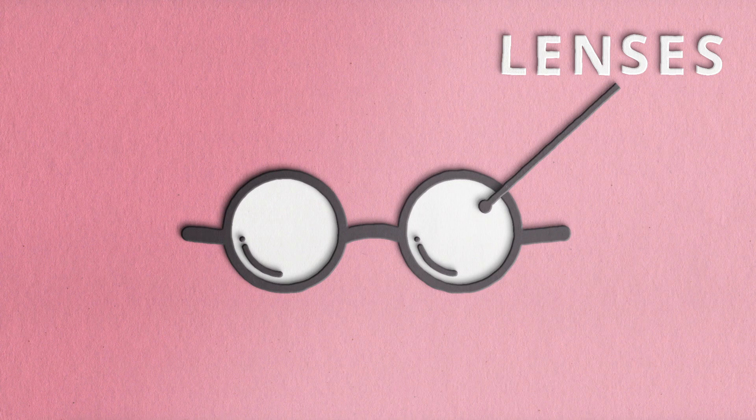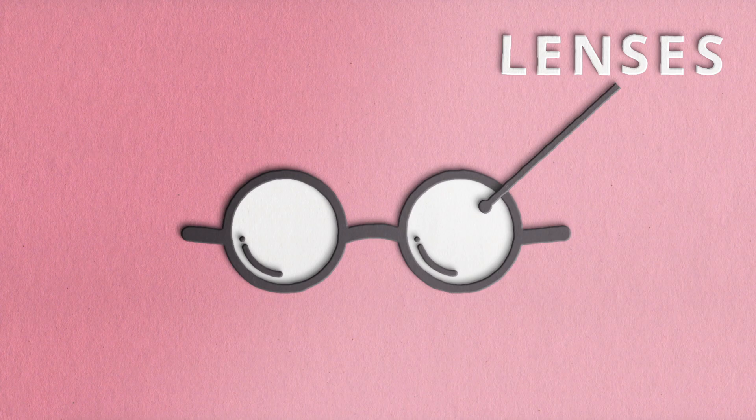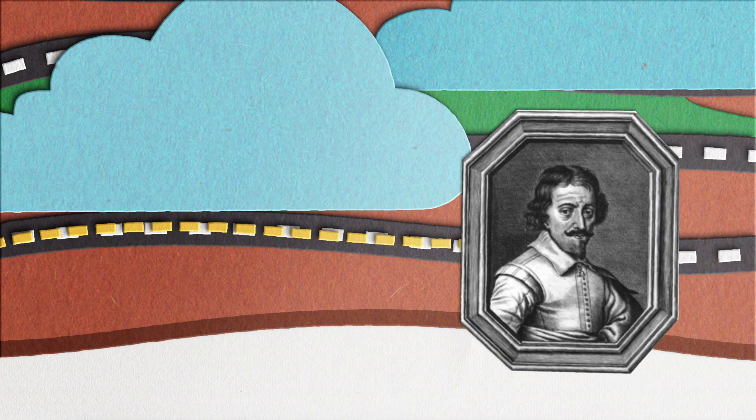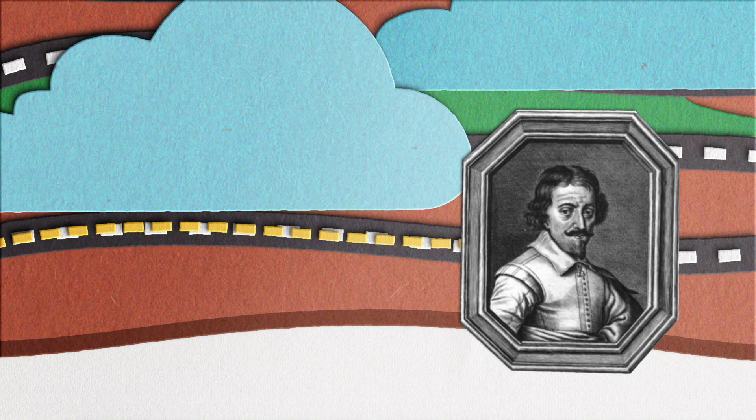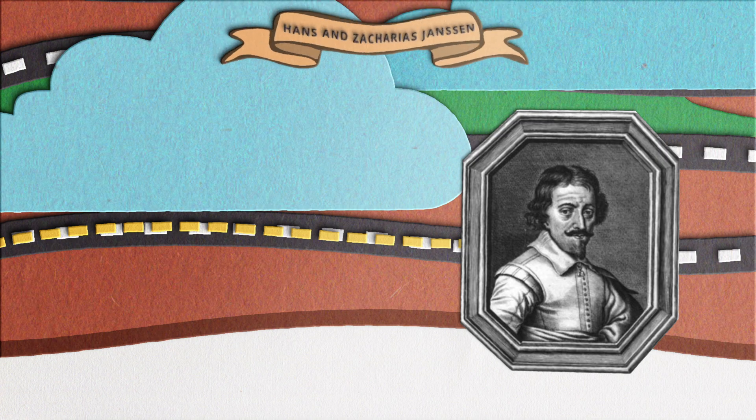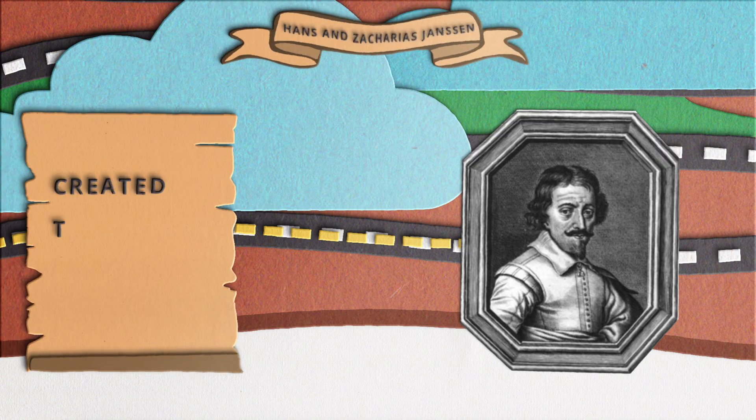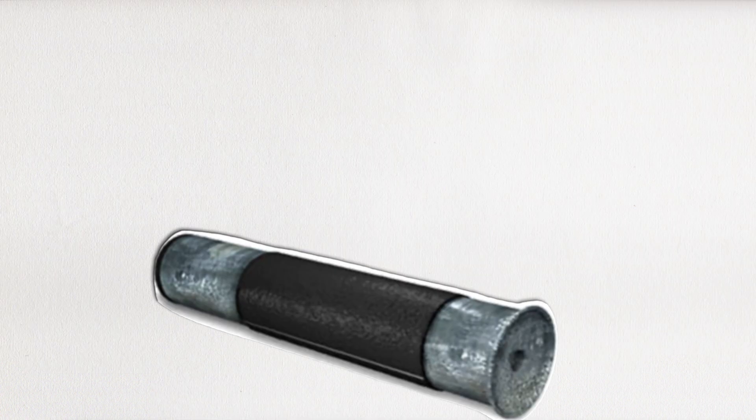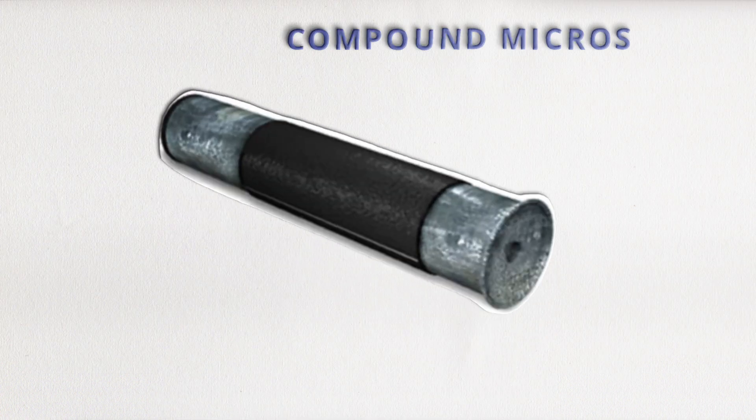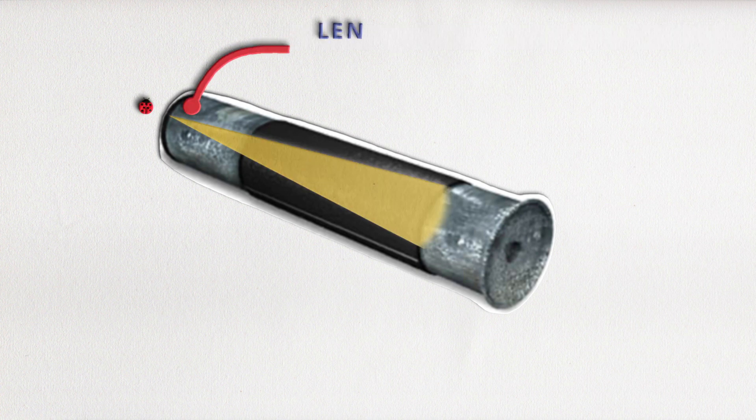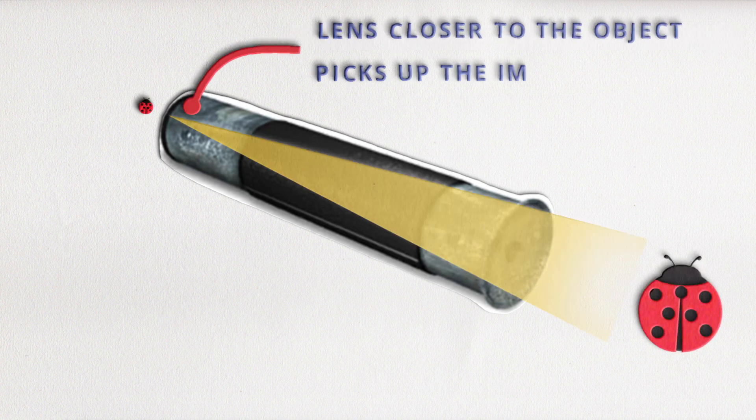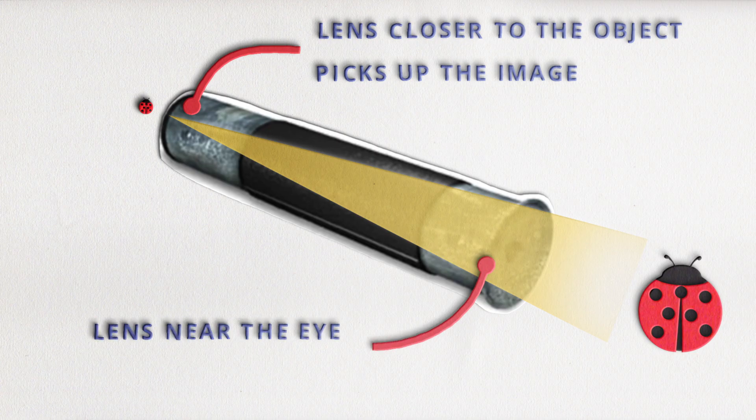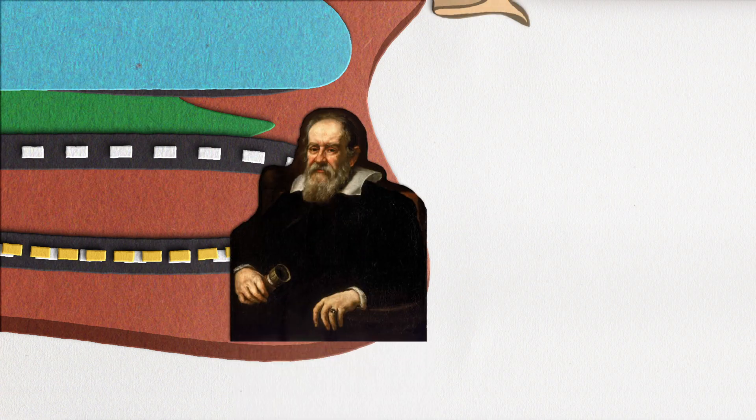In 1590, a father and son team of spectacle makers, Hans and Zacharias Janssen, created the first microscope. These early microscopes were compound microscopes, meaning they had at least two lenses. The lens closer to the object picks up the image, whereas the second lens near the eye is responsible for magnifying that image.